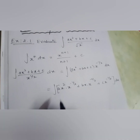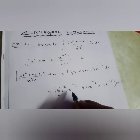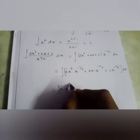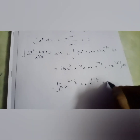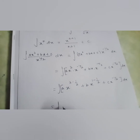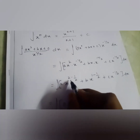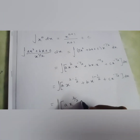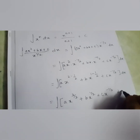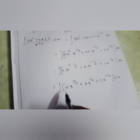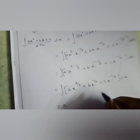Since the base is the same, powers can be added. So we get ∫[ax^(3/2) + bx^(1/2) + cx^(−1/2)] dx. Taking constants outside using the property, this becomes a∫x^(3/2) dx + b∫x^(1/2) dx + c∫x^(−1/2) dx.